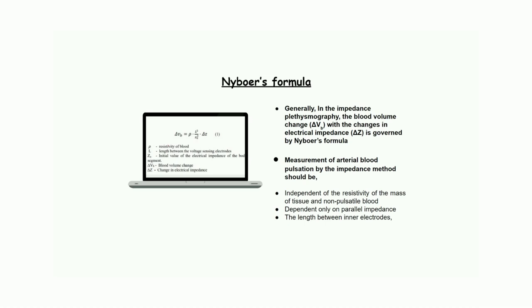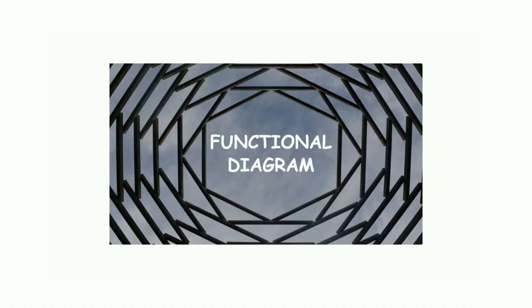Furthermore, measurement of arterial blood pulsation by the impedance method should be independent of the resistivity of the mass of tissue and non-pulsatile blood, dependent only on parallel impedance and the length between the inner electrodes. Now we can move on to functional diagram of our project.